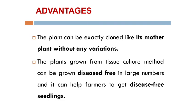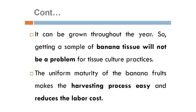Advantages of micropropagation in banana: The plant can be exactly grown like its mother plant without any variations. Plants grown from tissue culture method can be disease-free. It helps farmers to get disease-free, especially virus-free, seedlings — this is the main advantage. It can be grown throughout the year. Getting a sample of banana tissue will not be a problem for tissue culture practices. The uniform maturity of banana fruits makes the harvesting process very easy and reduces labor costs.